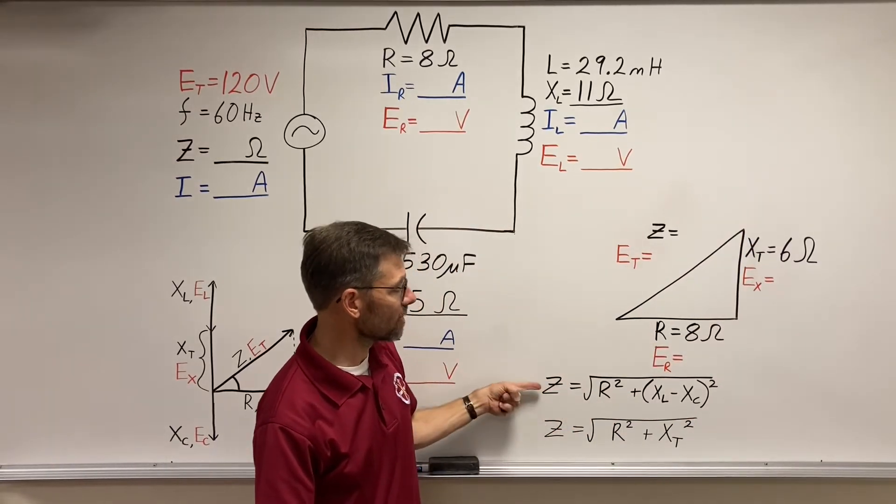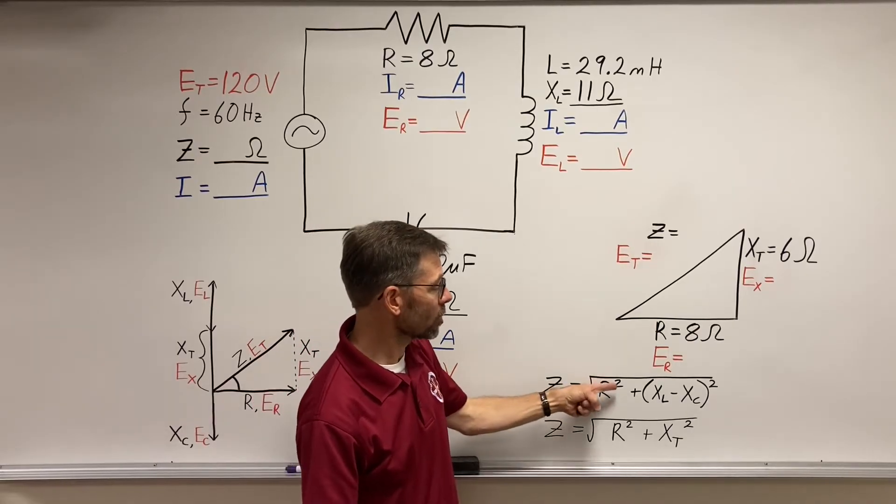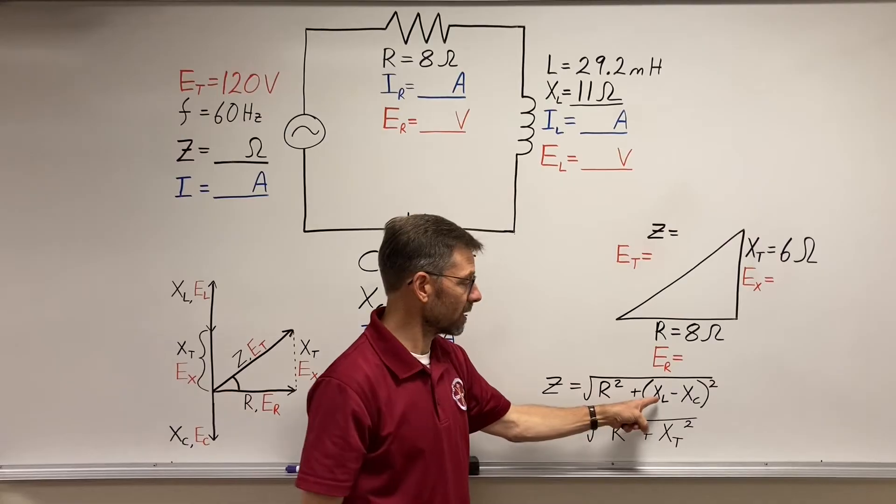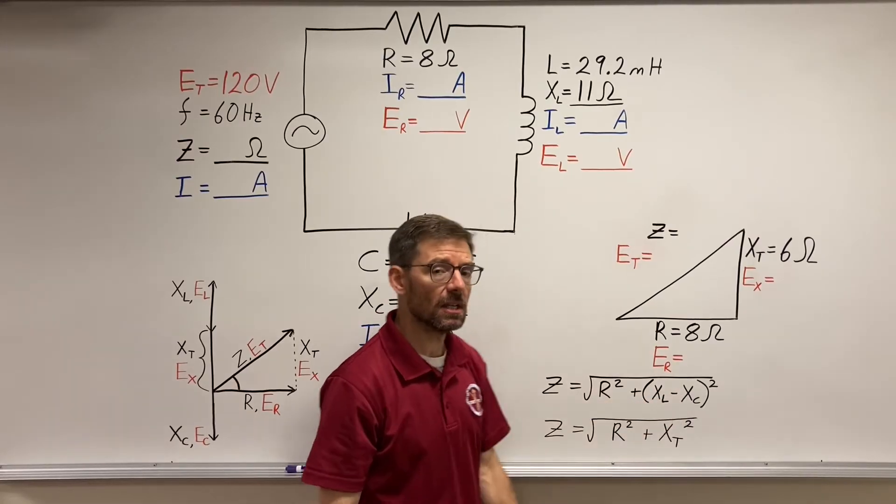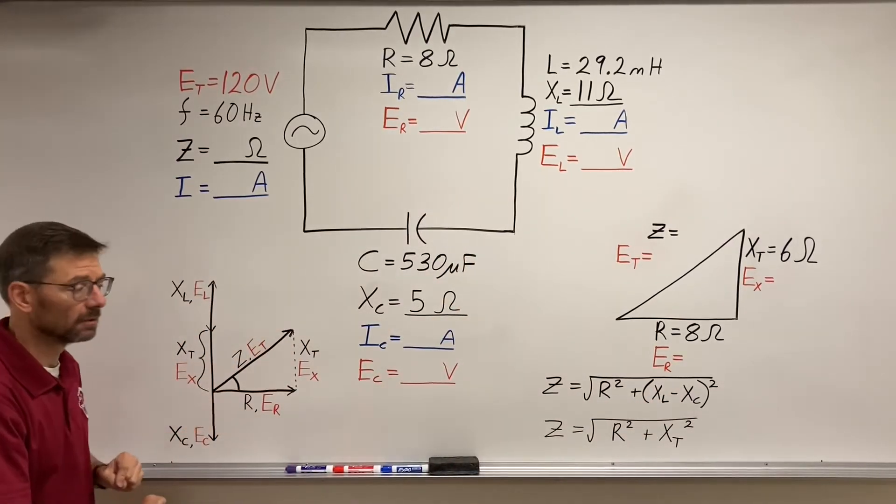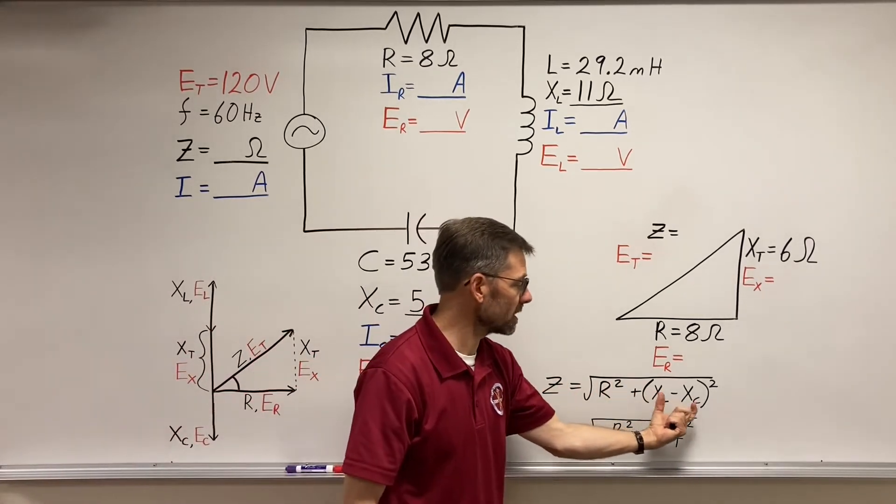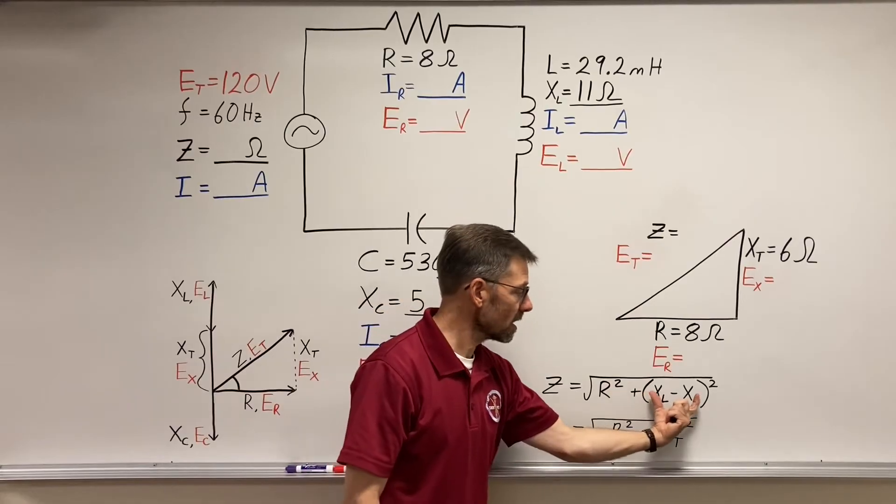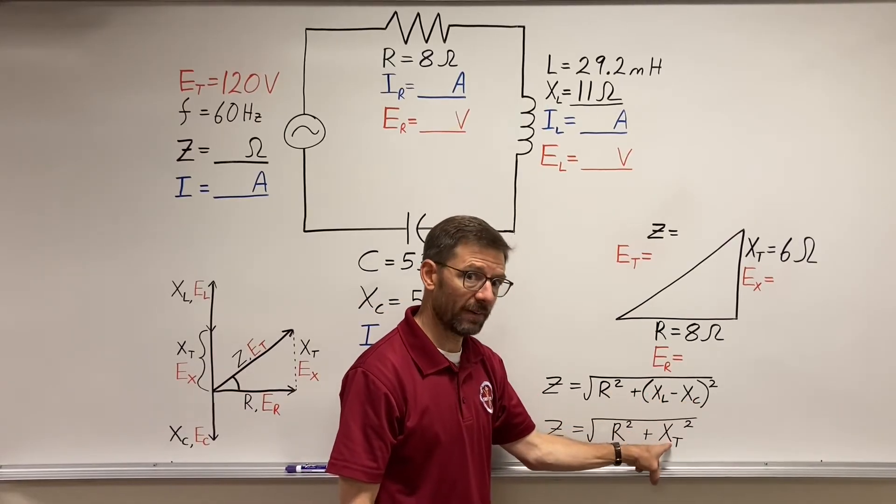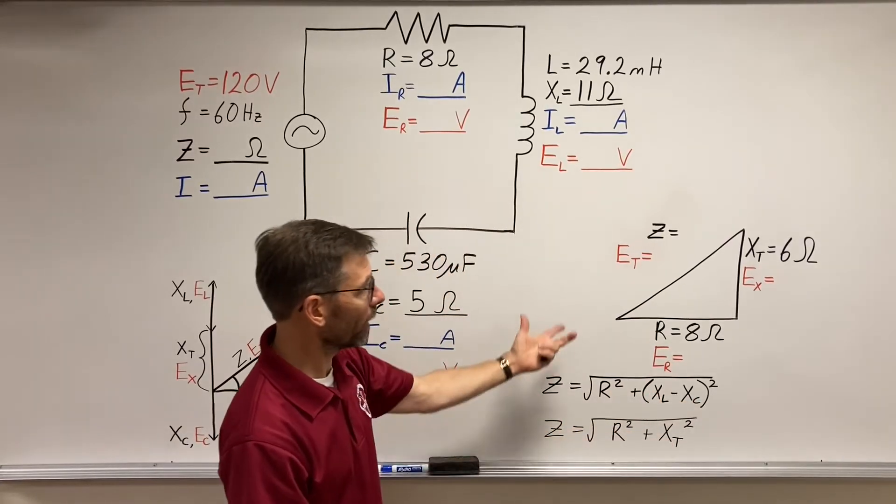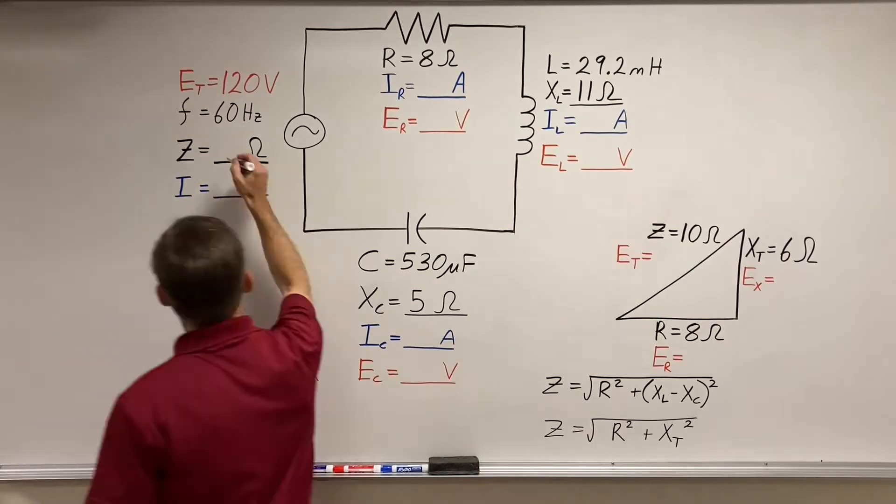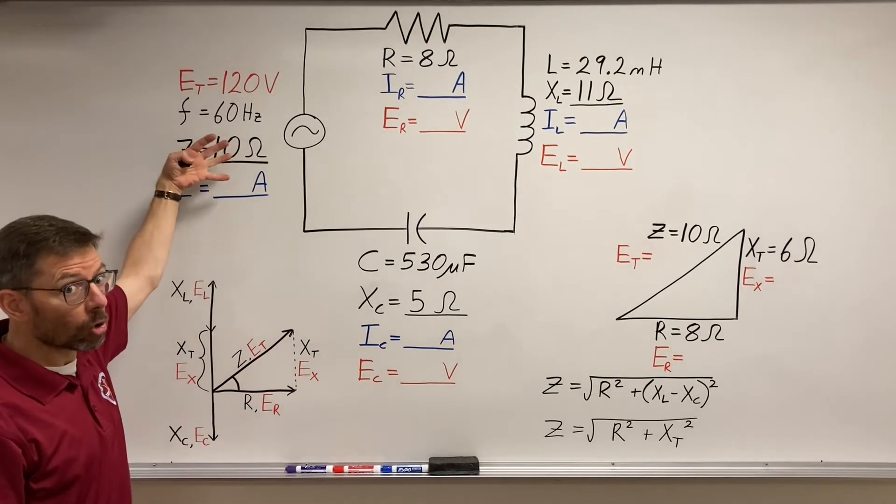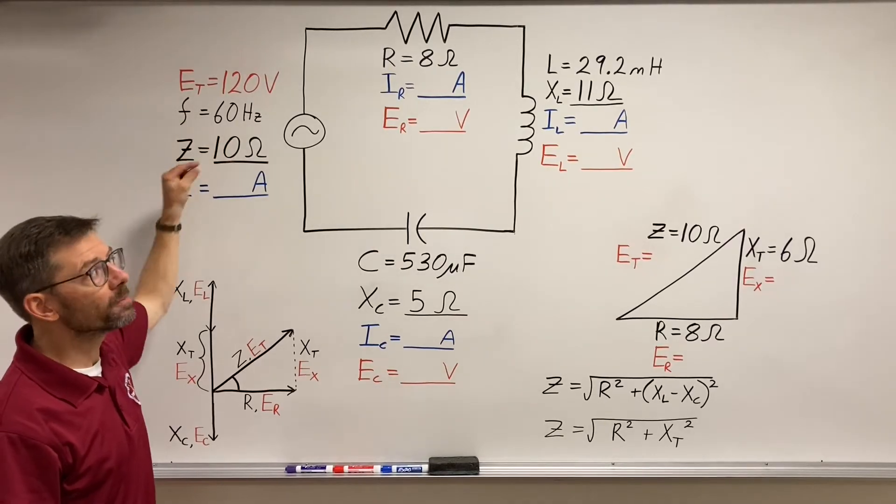Take the square root of that and I get Z. Now the other way to write it is a longer format. R squared plus, and I can put in parentheses the difference of XL minus XC. The big one minus the little one. And square that quantity. Hopefully you're seeing the connection between these two. This is essentially this value. Okay? And what do we get when we do that? So the circuit, the total circuit at its source, will see 10 ohms of opposition.